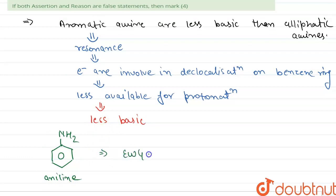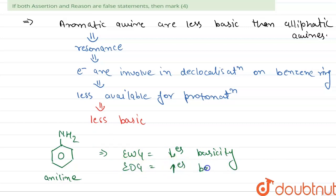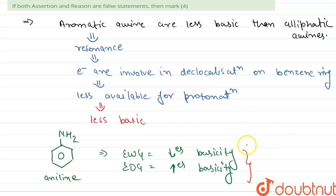However, for ortho-substituted anilines, we can say that they are usually weaker bases than aniline regardless of the nature of the substituent, whether it is an electron-donating group or an electron-withdrawing group.